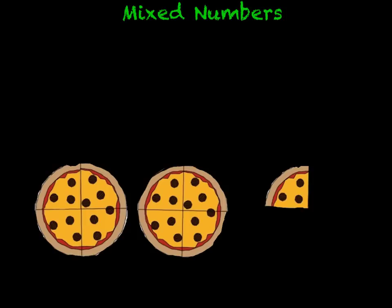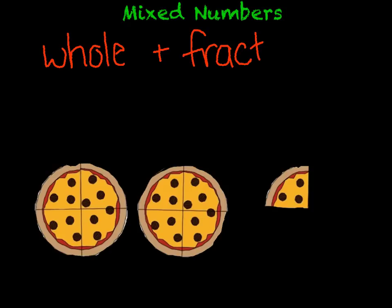And a mixed number, when written, is one whole—a whole number—plus a fractional amount. It's the two things together, that is why they call it a mixed number. So it's a whole number plus a fraction.